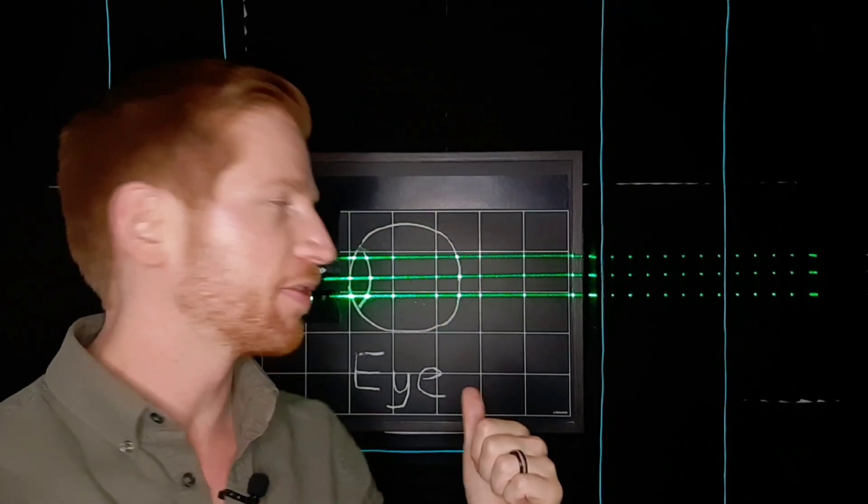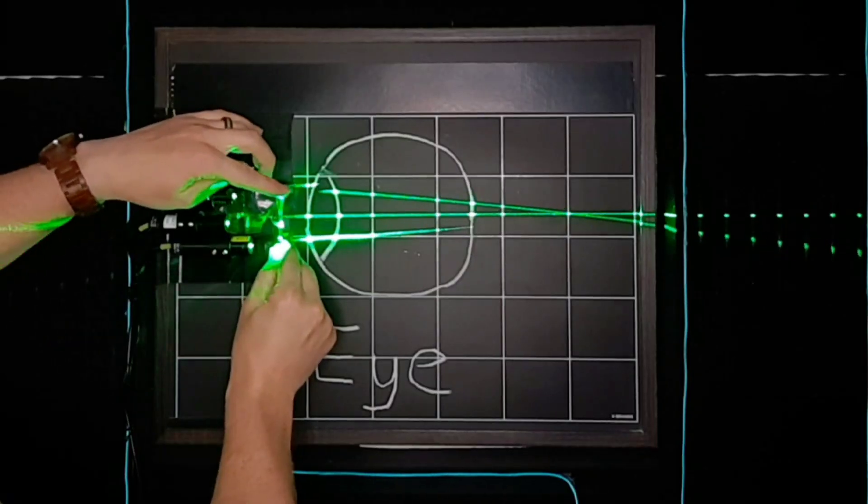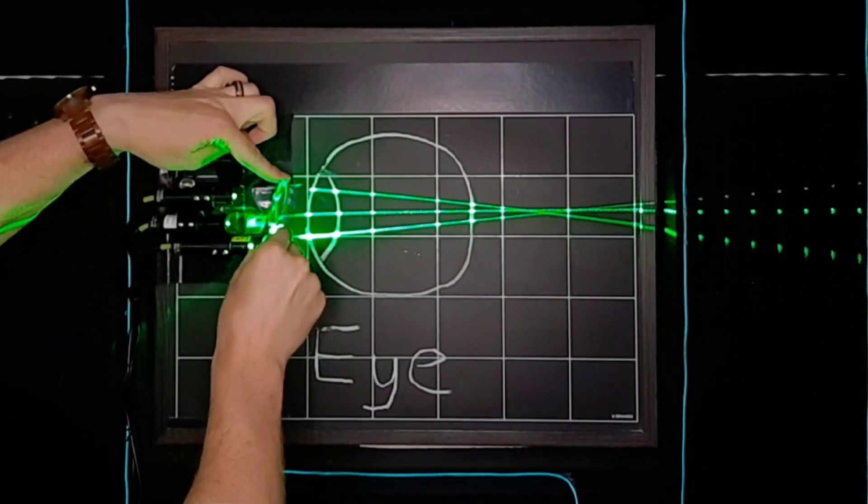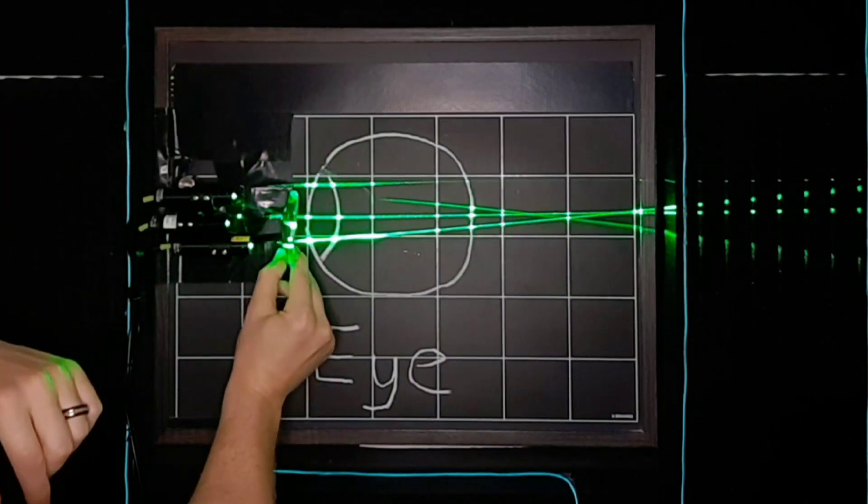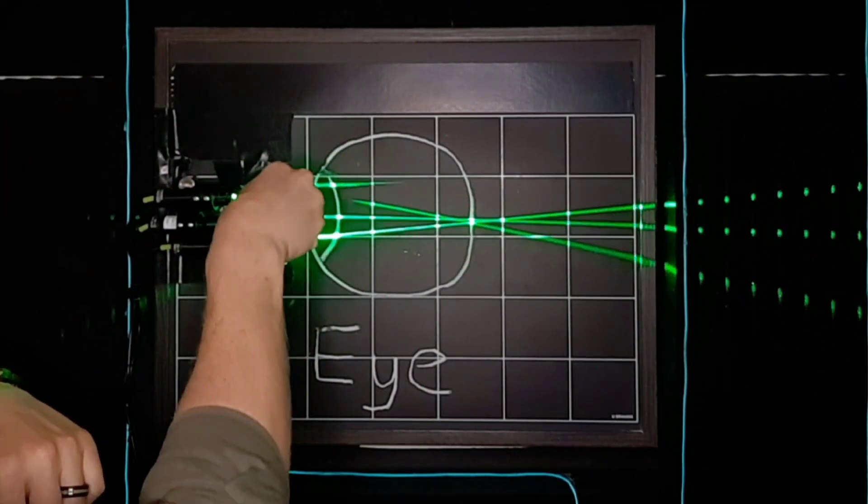Alright, back to this laser demo for a second. This is one of the lenses that addresses astigmatism. So as I rotate it, you can see that the amount the light is bent changes. That's again because this lens is bent differently in different directions, which shows up as I rotate this.